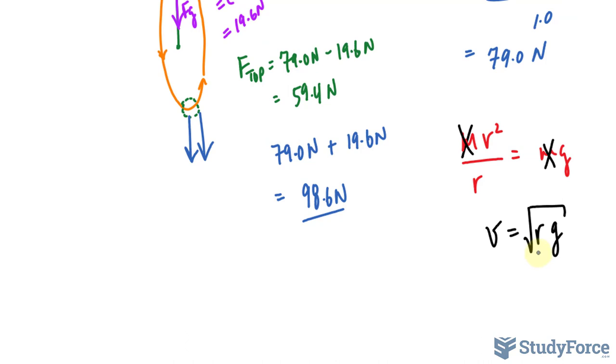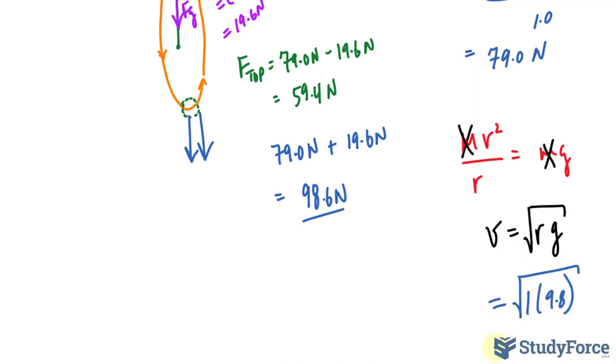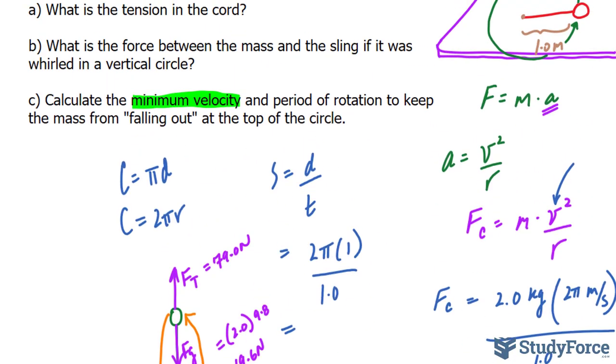Now substituting the radius of 1 in for r and 9.8, the square root of 9.8 is 3.13, 3.13 meters per second, and we'll only consider the positive version, because the negative version doesn't make sense in the context of this question. So that's the minimum velocity that needs to be maintained for this circle to continue occurring, this circular motion.